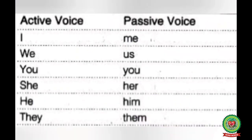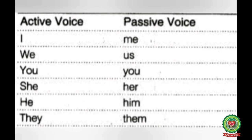Next, we are going to discuss a very important rule. While changing interrogative sentences from active to passive, we have to change the subjective case into objective case. The reason is that the subject of active voice becomes the object of passive voice. So in passive voice: 'I' will change into 'me', 'we' will change into 'us', 'you' will remain 'you', 'she' will change into 'her', 'he' will change into 'him', and 'they' will change into 'them'.